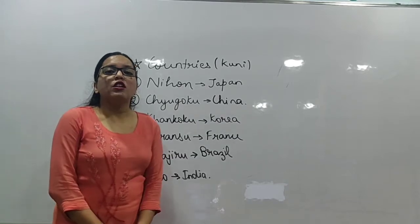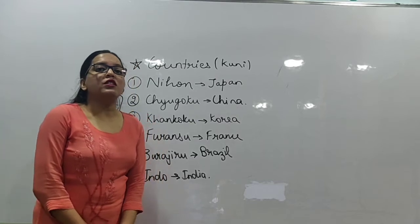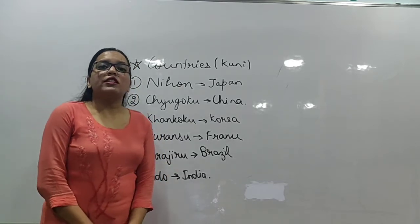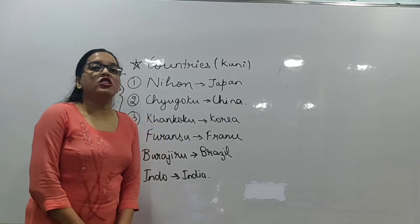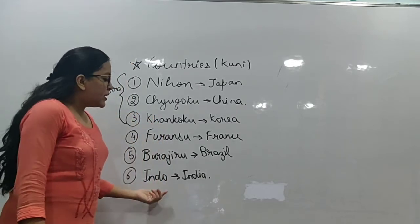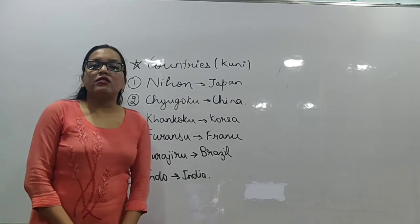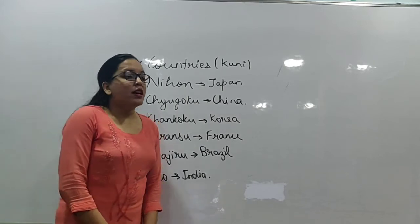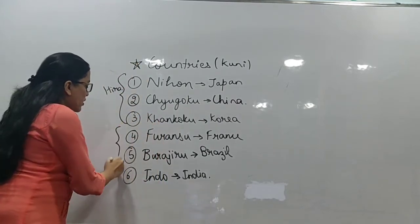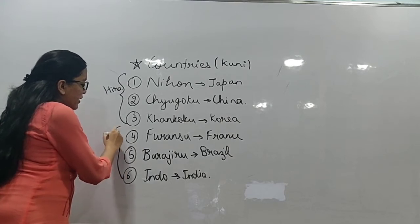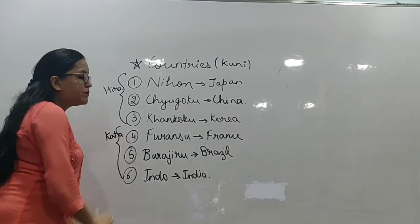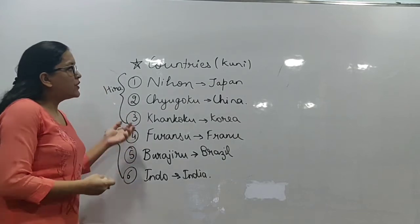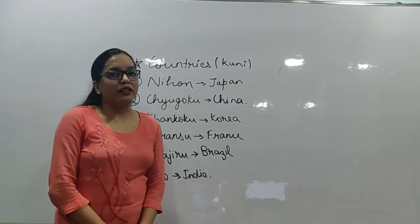Furansu is France. Burajiru is Brazil. And the last country written here is Indo — Indo means India. All three of these countries are in Katakana, while the previous three countries — Japan, China, and Korea — are in Hiragana.